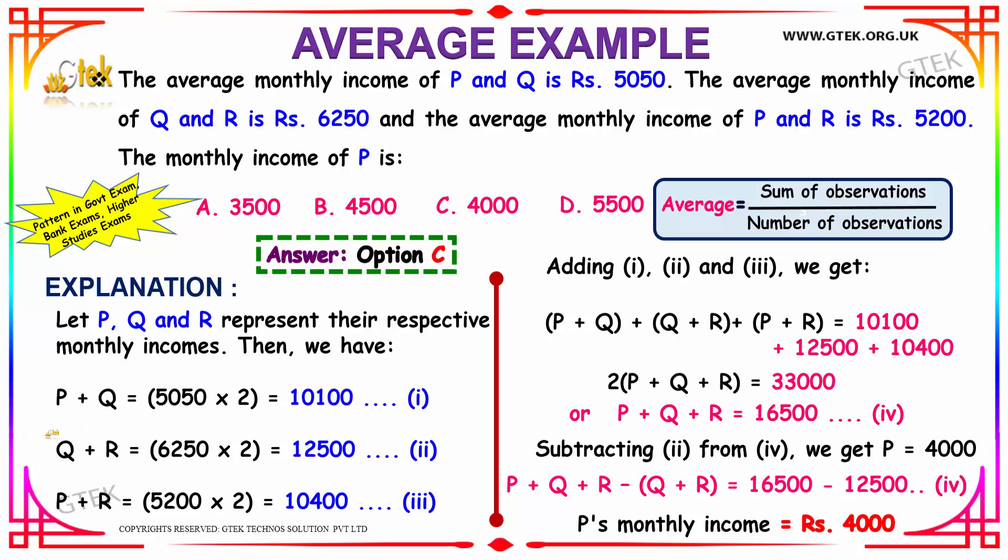Similarly, for Q and R, the average is 6250 multiplied by 2. You get the sum of observations as 12500. Further, P plus R is given to be 5200, which when multiplied by 2 you get 10400.